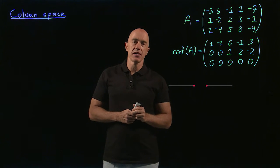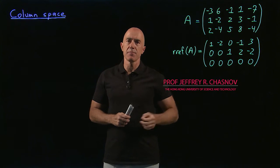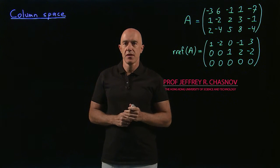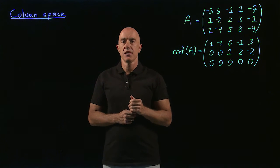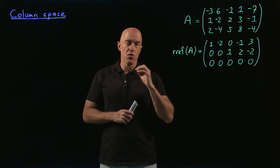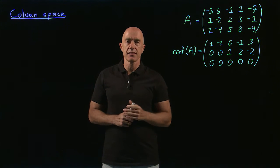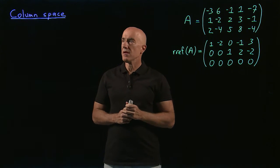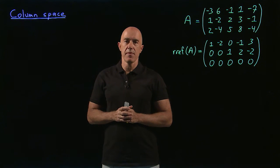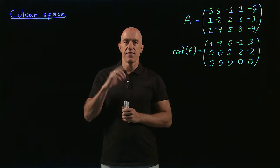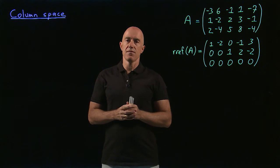Let's continue our discussion of the fundamental vector subspaces of a matrix. We already talked about the null space of a matrix — those were all the vectors x such that Ax equals 0. In this video I want to talk about the column space of a matrix, that's the vector space spanned by the columns of the matrix.